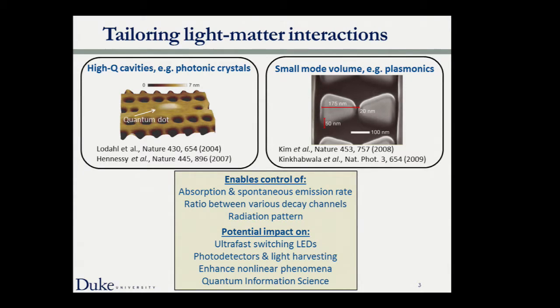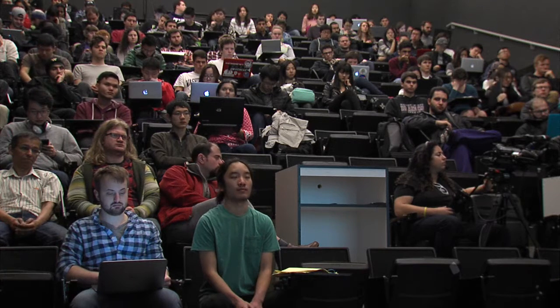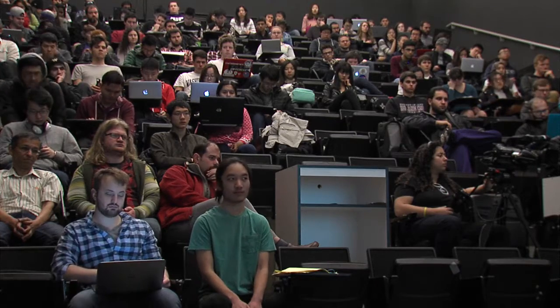Sculpting the environment allows control of absorption and spontaneous emission rate, control of the ratio between various decay channels, and the radiation pattern of materials. We can get material properties far removed from the bulk counterpart — properties not found in naturally occurring materials. This lays the groundwork for technologies such as ultrafast switching LEDs enabled by ultrafast spontaneous emission rates, efficient photodetectors, light harvesting from enhanced absorption, enhanced nonlinear phenomena, and pathways to quantum information.